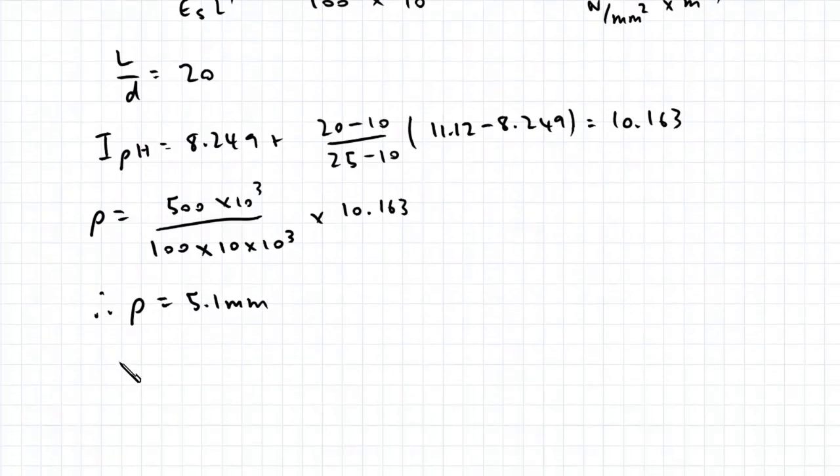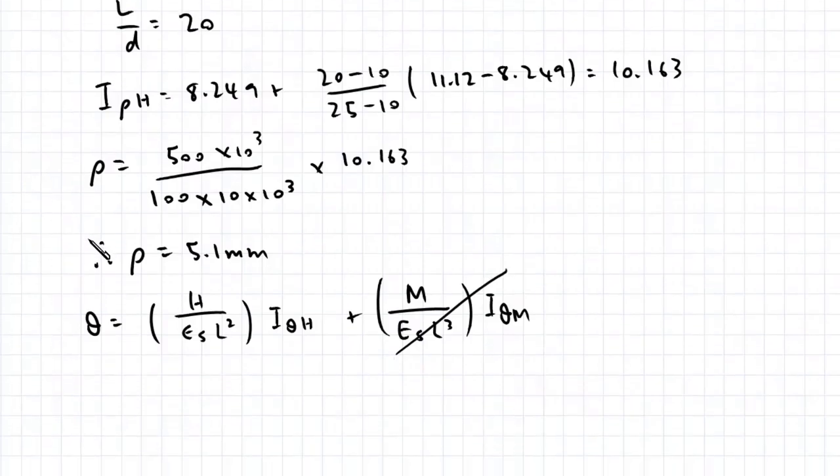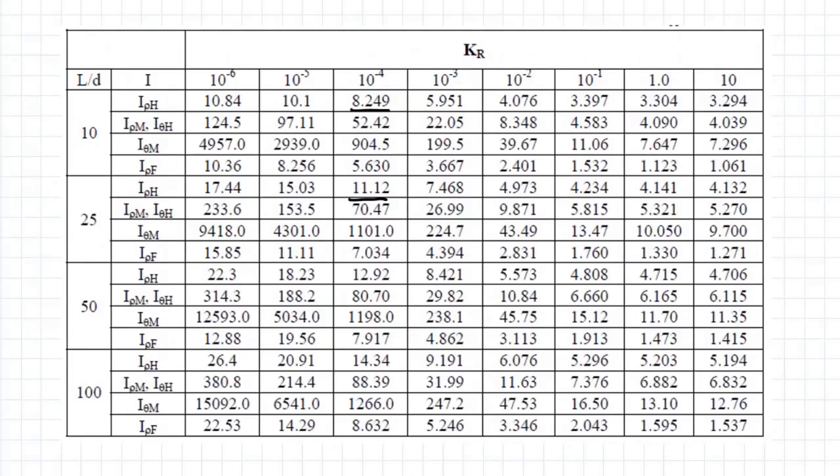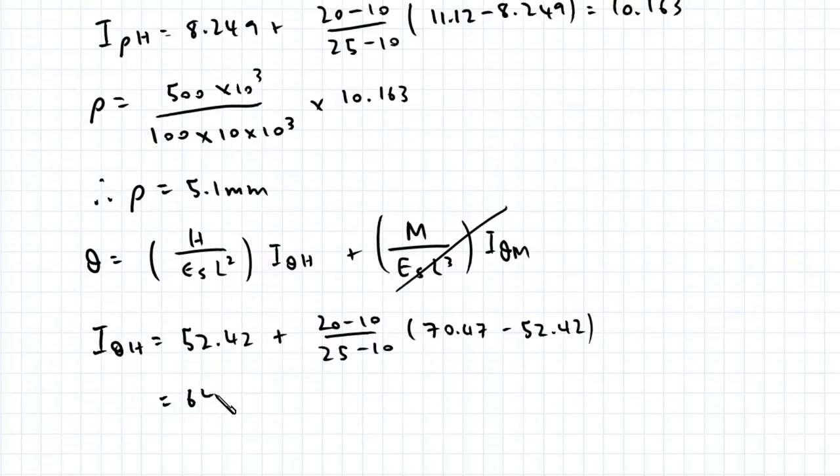Now we need to find the rotation of the pile. Theta is equal to H over ES L squared multiplied by I theta H, plus M on ES L cubed I theta M. Again, because there's no external moment applied, we don't have to worry about this second term. Similarly for I theta H, we're going to need to interpolate between this value and this value. I theta H is equal to 52.42 plus 20 minus 10 divided by 25 minus 10, multiplied by 70.47 minus 52.42 by linear interpolation. This works out to be 64.453.